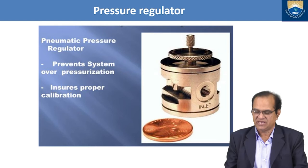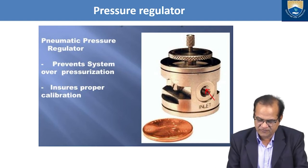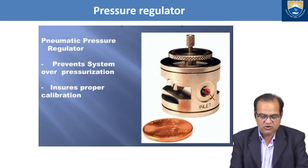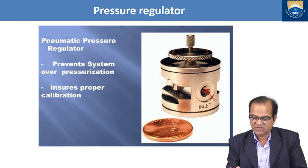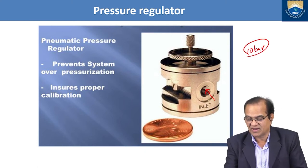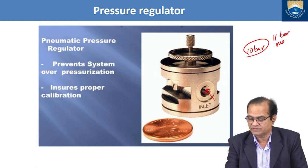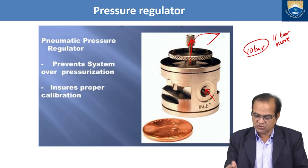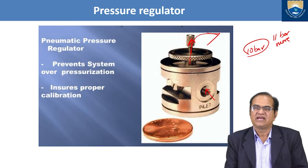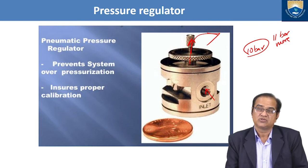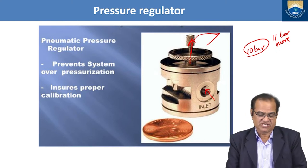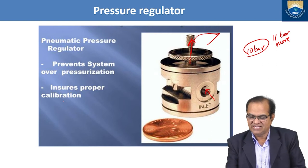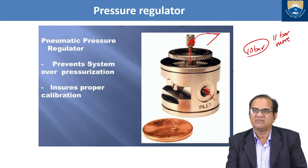The pressure regulator — air flow enters from one side and exits the other. The pneumatic pressure regulator prevents system over-pressurization. If the system is working at 10 bar but pressure rises to 11 bar or more, the valve lifts and air bypasses to outside as a safety measure, so the system does not get damaged. This also ensures proper calibration and that the system operates at a given pressure.